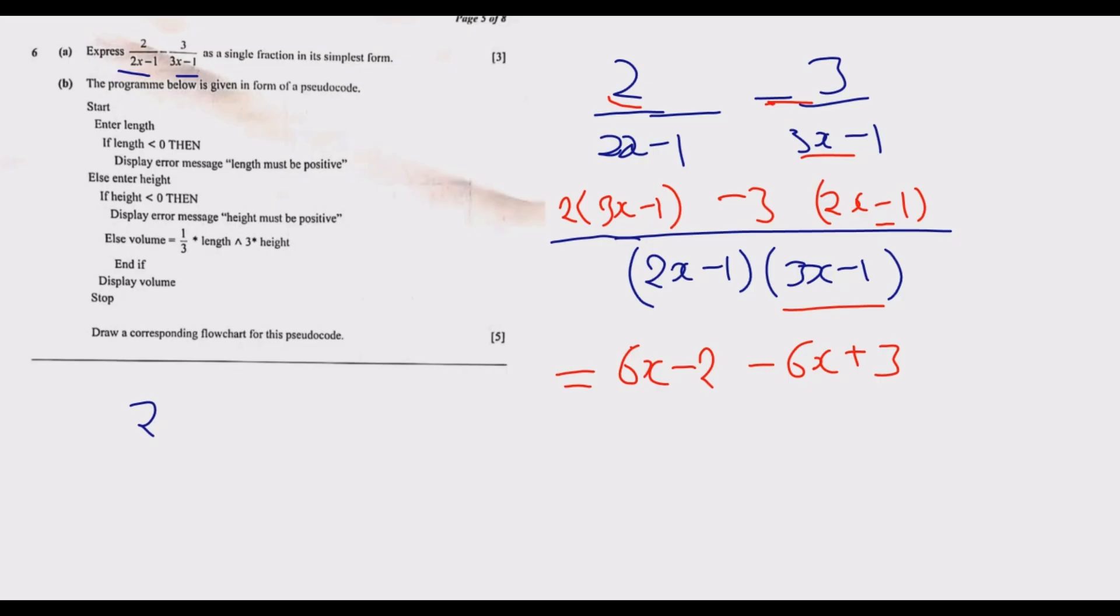The denominator is (2x minus 1) multiplied by (3x minus 1). We simplify the numerator: 6x minus 6x is zero, then negative 2 plus 3 is 1. So it's just 1 over (2x minus 1) multiplied by (3x minus 1). This is basically our final answer in the most simplified form for three marks.